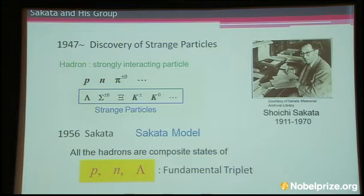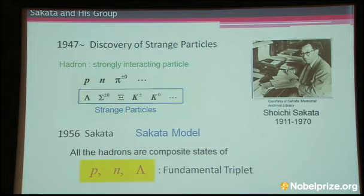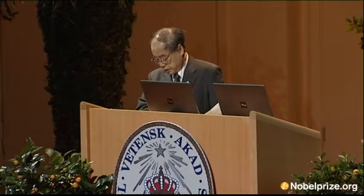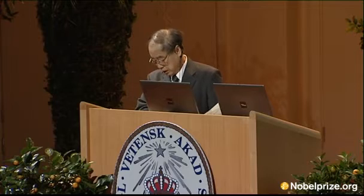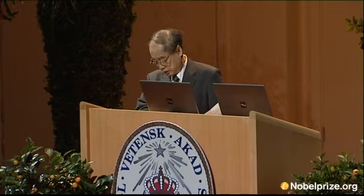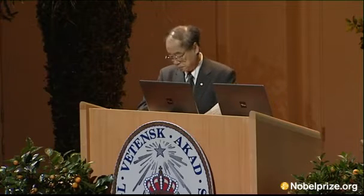In other words, the three baryons P, N, and lambda are the fundamental building blocks of the hadrons in this model. Eventually this model was replaced by the quark model, where the triplet quarks U, D, and S replaced P, N, and lambda. But we can say that the root of the idea of the fundamental triplet is in the Sakata model.